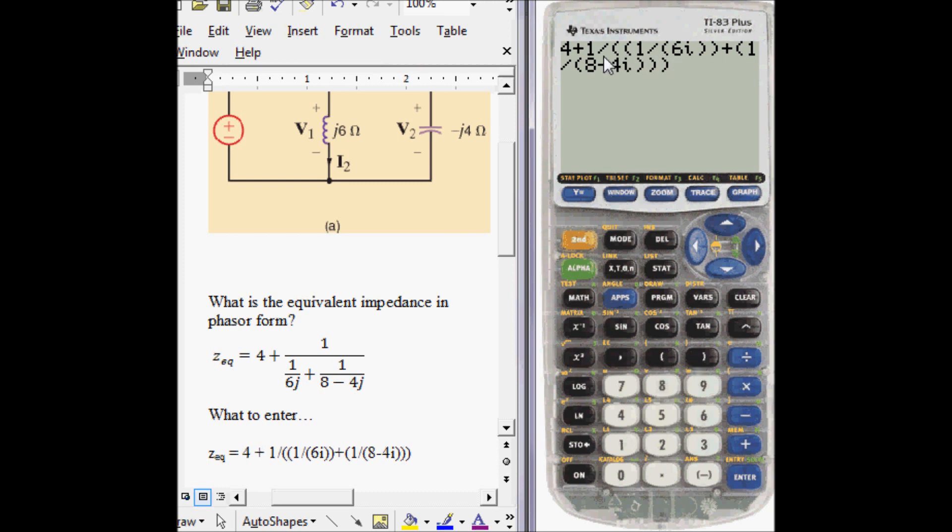A way to check if you've closed them all is count how many open to the right. One, two, three, four, five. And how many open to the left? One, two, three, four, five. So you've done them all.